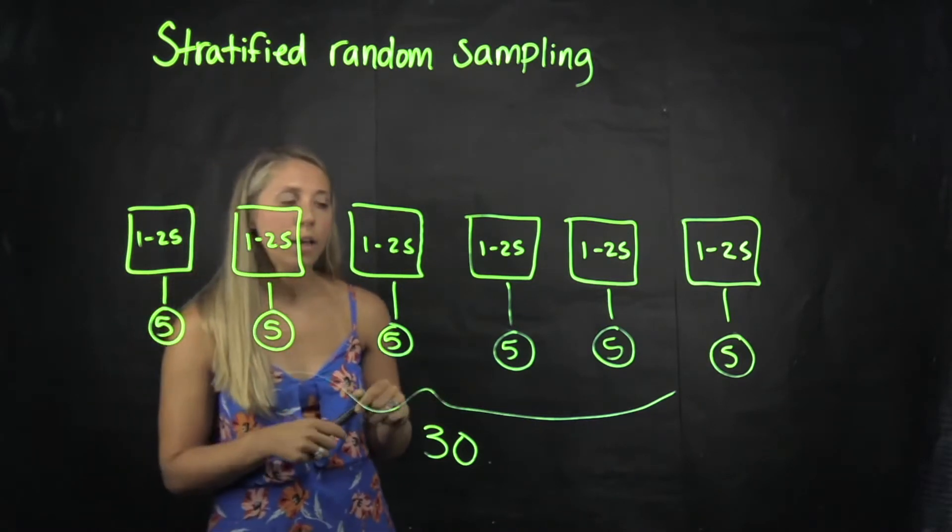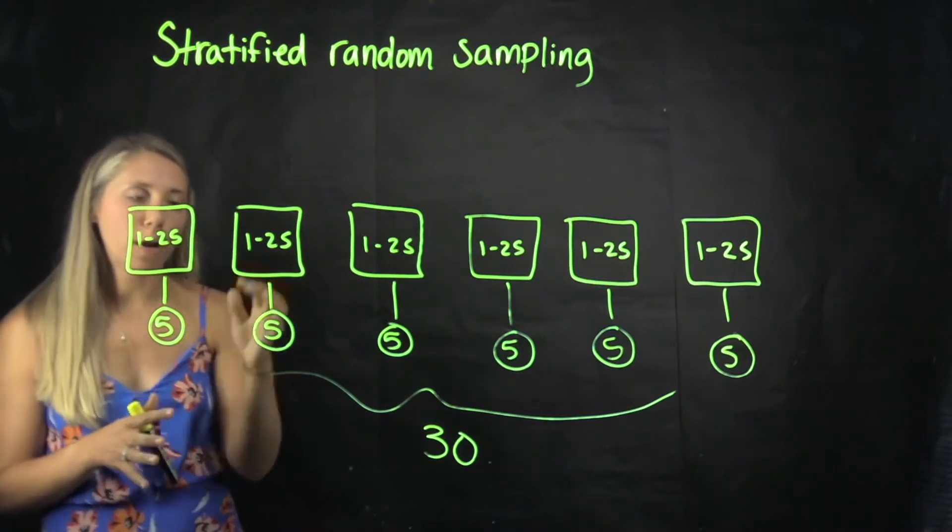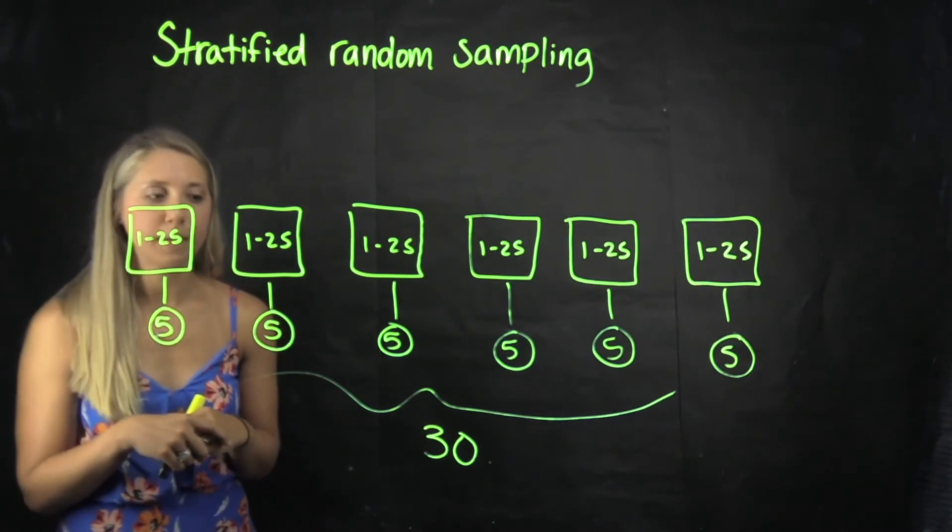So it gives a very good range of opinions because they're taking 5 from each class. So that's another example of stratified random sampling.